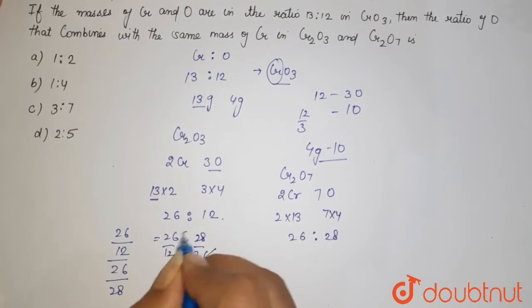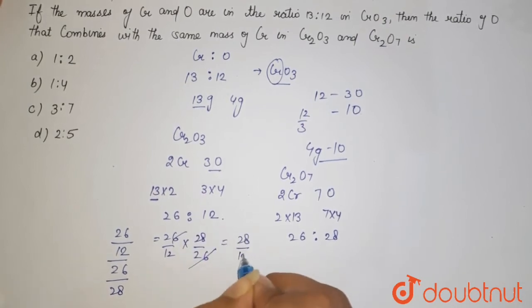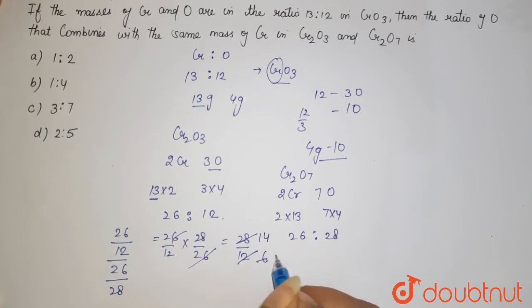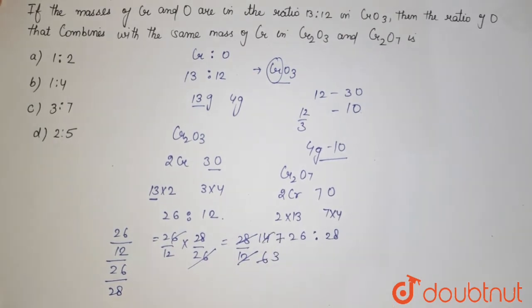so it is cancelled with this, it is 28 with this, it can be cancelled to 6 and it is 14. So according to that we get to know 7:3, but the question is that the ratio must be of Cr2O3 then Cr2O7, so here it is 3